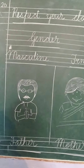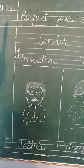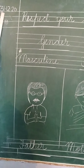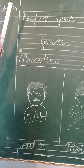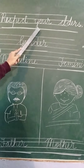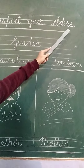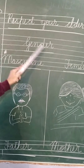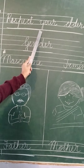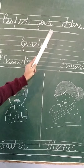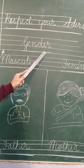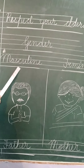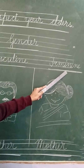Everyone take out your copy and write down today's date. Today's date is 31.12.20. And the quotation is: respect your elders. Put the full stop and then write 'adding gender.' Draw the blue pencil line, then again draw the blue pencil line.